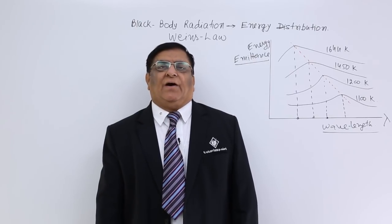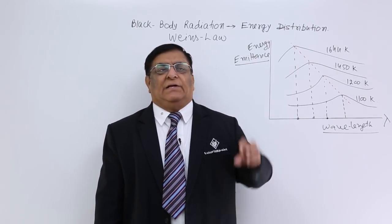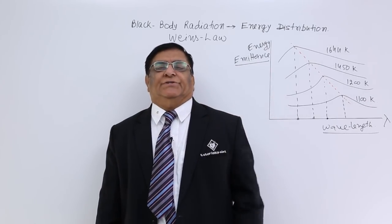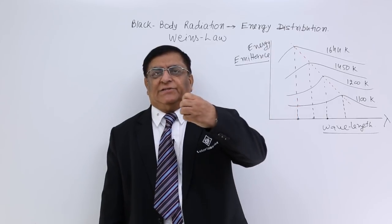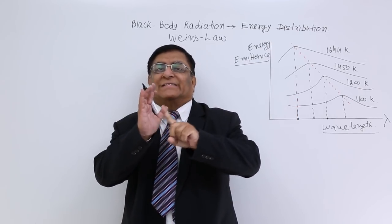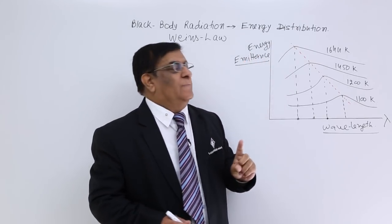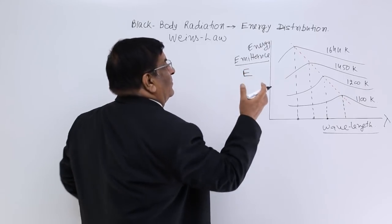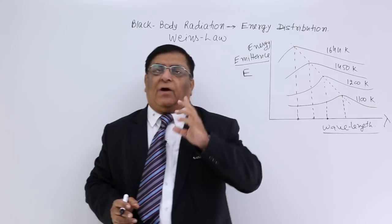When a body is at a higher temperature than its surroundings, it emits energy — it radiates out energy. That is emittance. The energy radiated per unit area per second is known as emittance, and that emittance for any particular wavelength lambda.